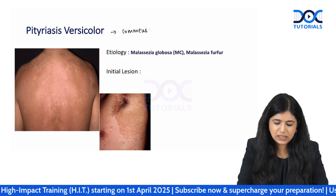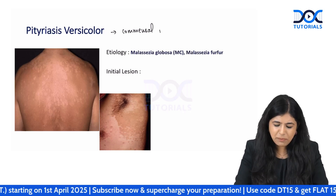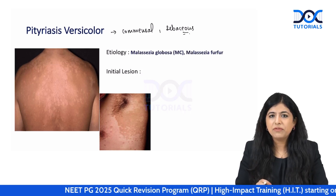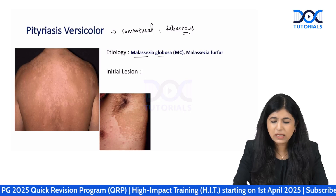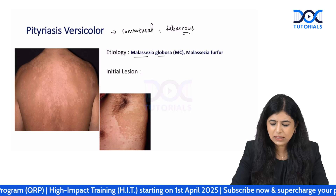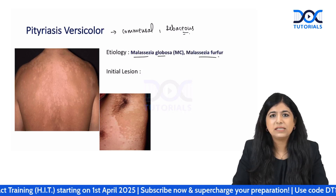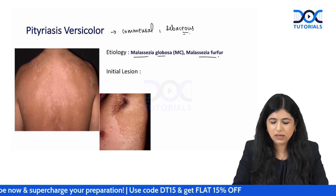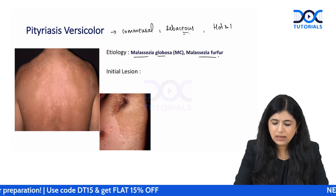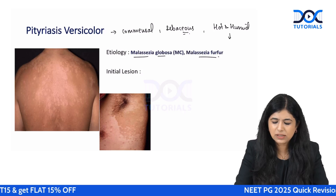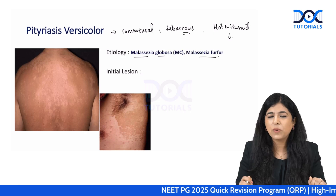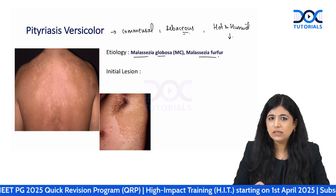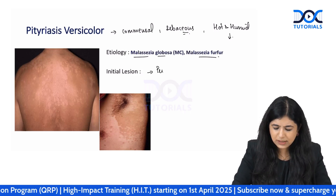Pityriasis versicolor is caused by a commensal fungus that lives in the human body, especially in sebaceous areas. The most common cause is Malassezia globosa, and the second most common is Malassezia furfur. This commensal organism stays as a yeast in normal conditions, but in hot and humid conditions it converts to hyphae — making it a dimorphic fungus — and that is when it causes disease.